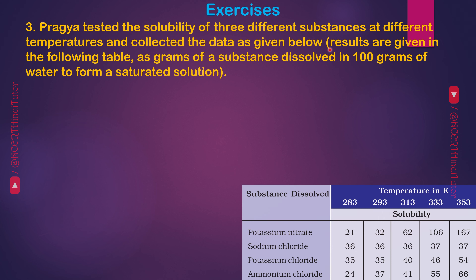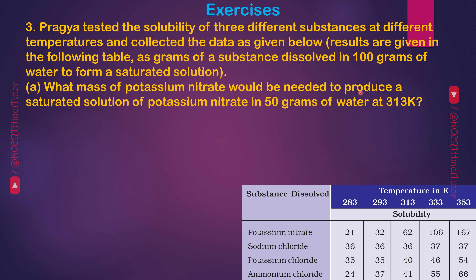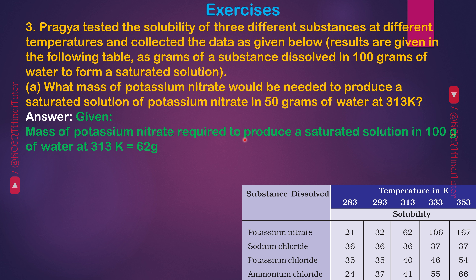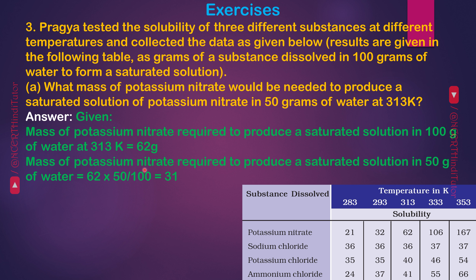Question 3: Pragya tested the solubility of three different substances at different temperatures and collected the data as given in the table (grams of a substance dissolved in 100 grams of water to form a saturated solution). A — What mass of potassium nitrate would be needed to produce a saturated solution in 50 grams of water at 313 Kelvin? Answer: Mass required in 100 g water at 313 K = 62 g. Therefore, mass in 50 g water = 62 × 50 / 100 = 31 g.